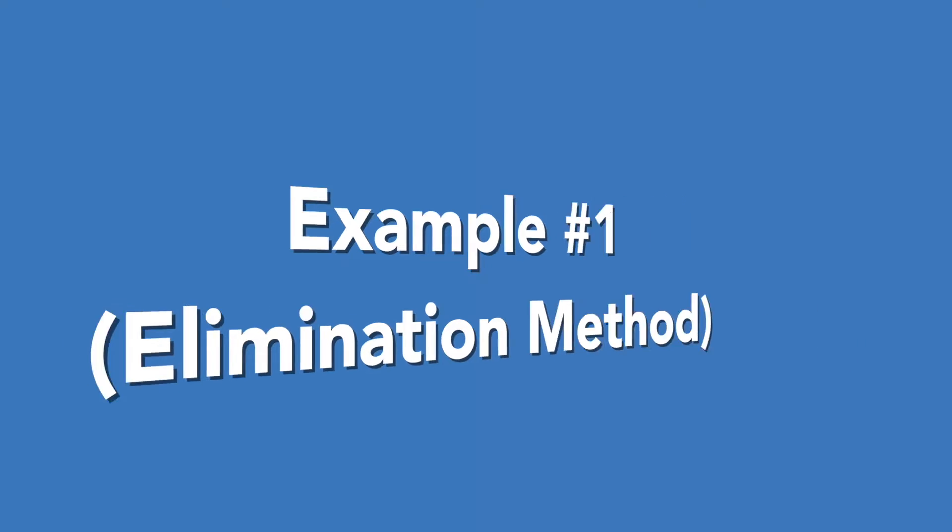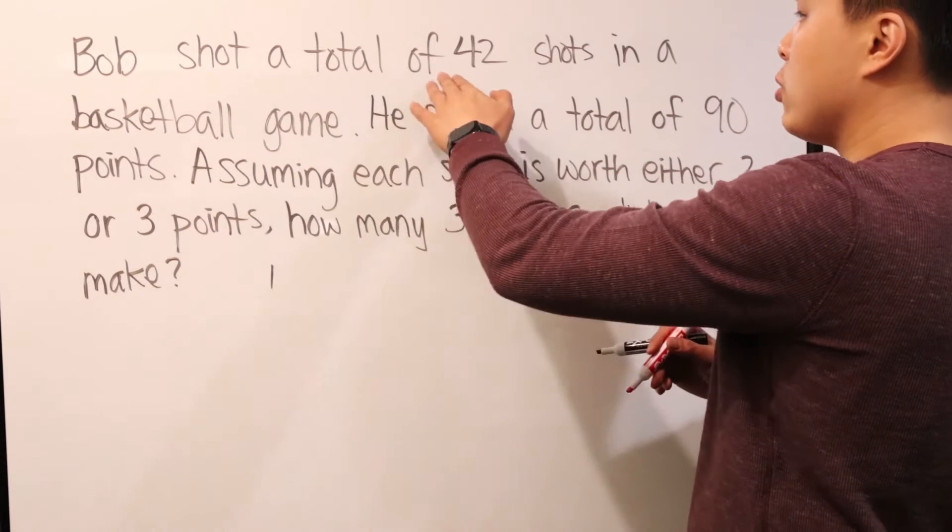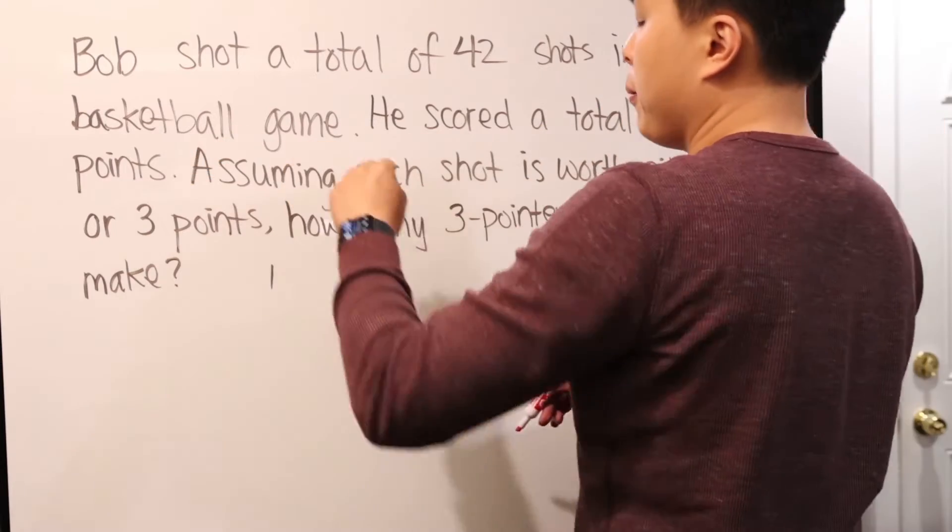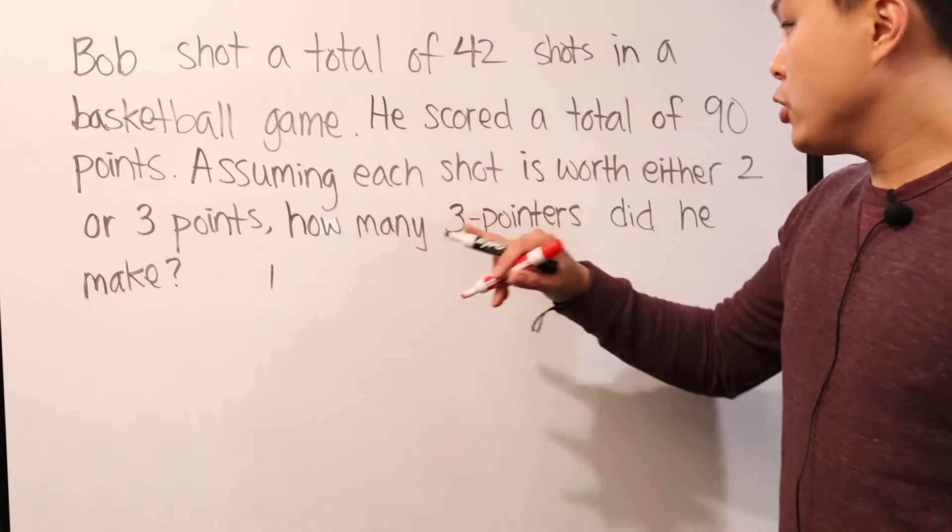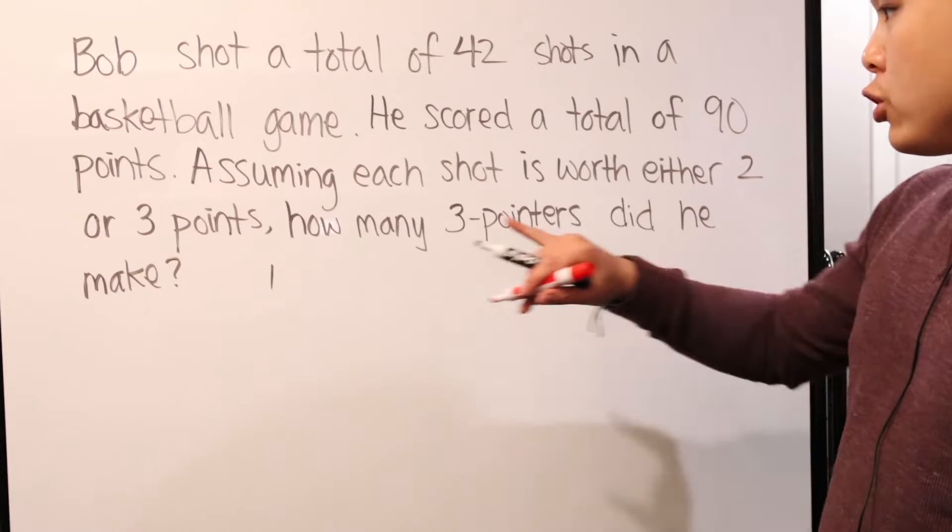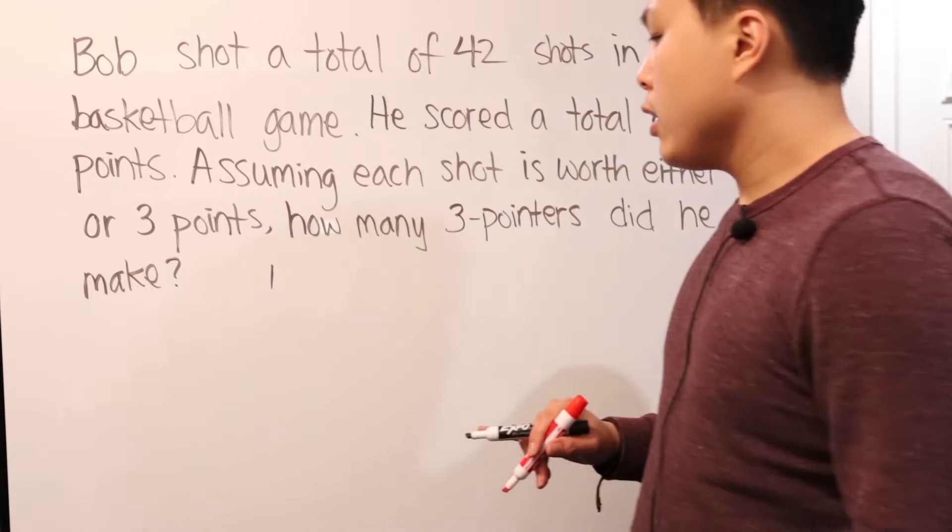I'm going to show you some of these system of equation word problems and another way of solving just by cheating the system. So, let's begin. All right. So, for our first problem, we have this right here. Bob shot a total of 42 shots in a basketball game. He scored a total of 90 points. Assuming each shot is worth either two or three points, how many three-pointers did he make?